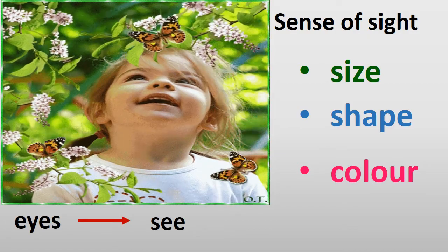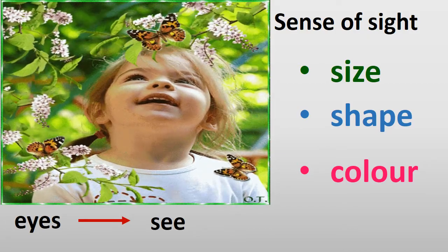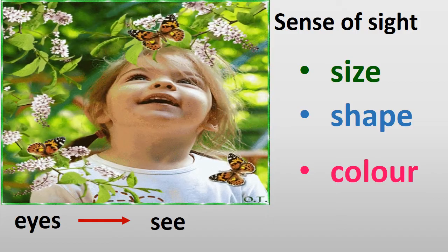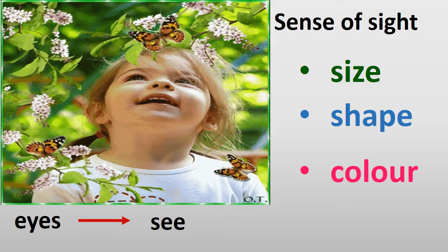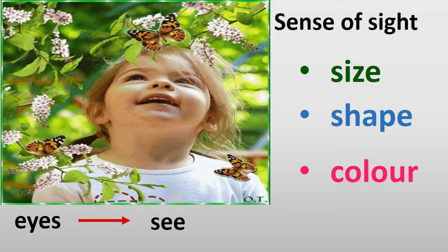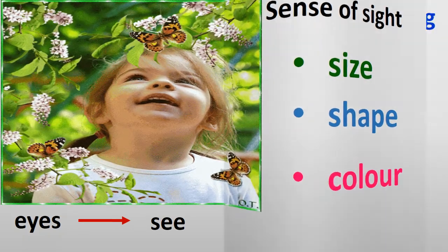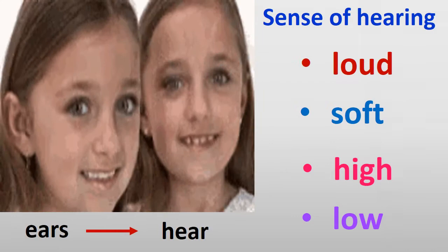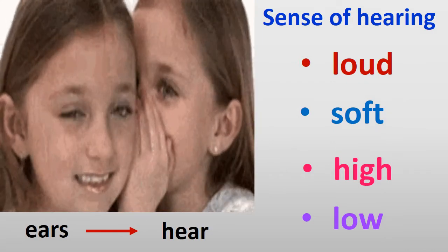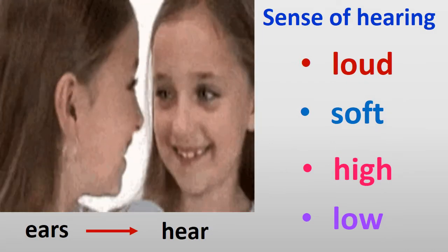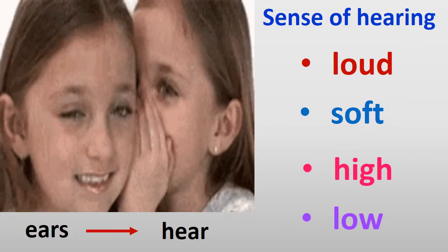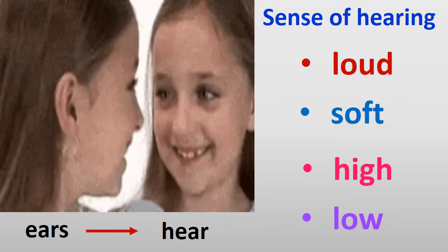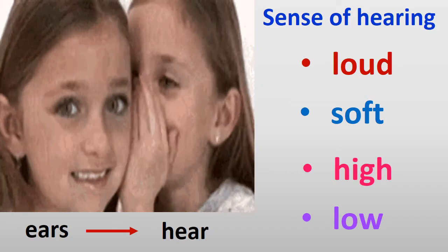What can our sense of sight tell us? Our sense of sight tells us the size, shape, and color of things. Our sense of hearing tells us if a sound is loud or soft, and high or low.